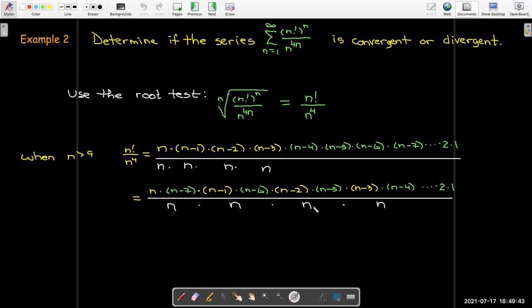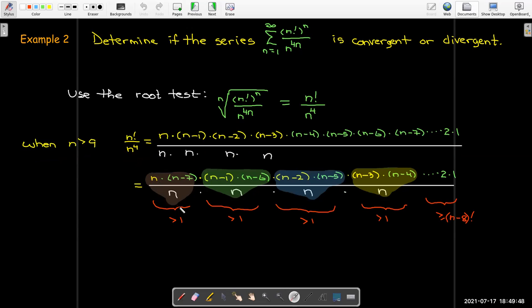Now when I do that, these products here are all going to be bigger than one when n is greater than 9. And so, and then the tail is just going to be n minus 8 factorial, right?